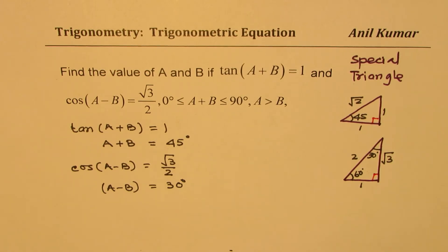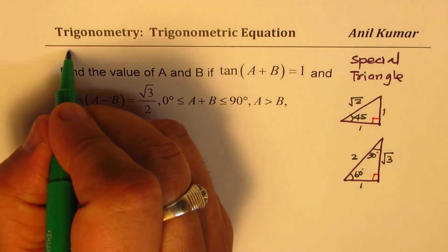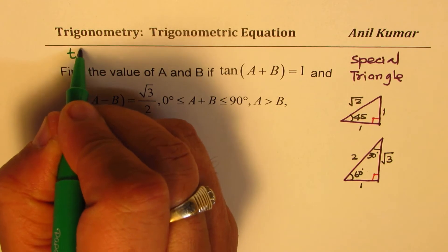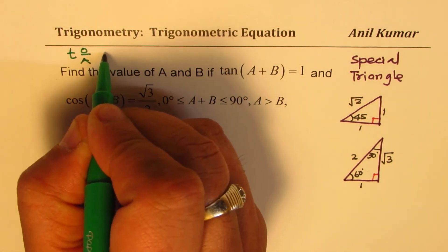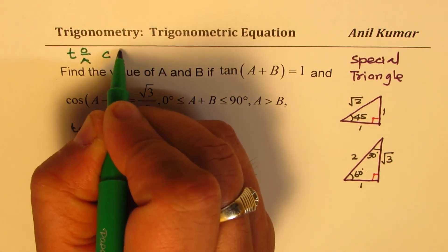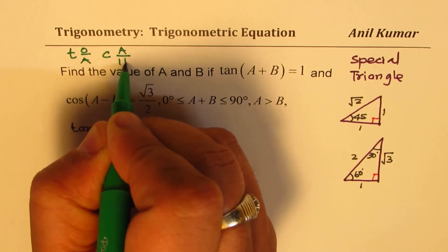Remember the ratios. What is tan? Tan is opposite over adjacent. And cos is adjacent over hypotenuse. Keep that in mind.